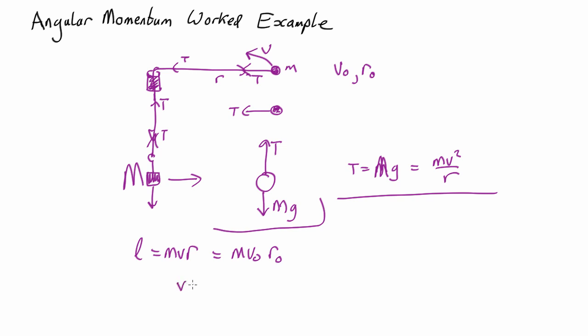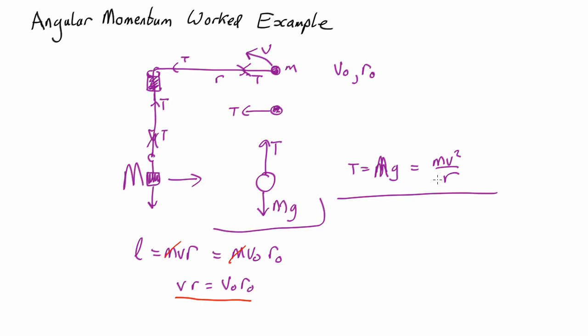So what we get is that v r equals v0 r0, cancelling the masses. So we've got two unknowns there, v and r. We can solve to get where the equilibrium position is going to be.